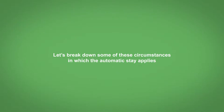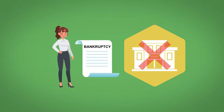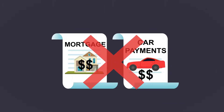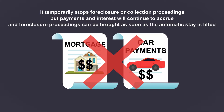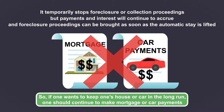Let's break down some of these circumstances to which the Automatic Stay applies. First, once a person files a bankruptcy petition, the Automatic Stay immediately stops the bank from foreclosing on, or repossessing, the debtor's real or personal property. Examples include the debtor's home or her car. The Automatic Stay doesn't allow the debtor to avoid mortgage or car payments — it temporarily stops foreclosure or collection proceedings, but payments and interest will continue to accrue. And the foreclosure proceedings can be brought as soon as the Automatic Stay is lifted. So, if one wants to keep one's house or car in the long run, one should continue to make mortgage or car payments even when the Automatic Stay is in effect.